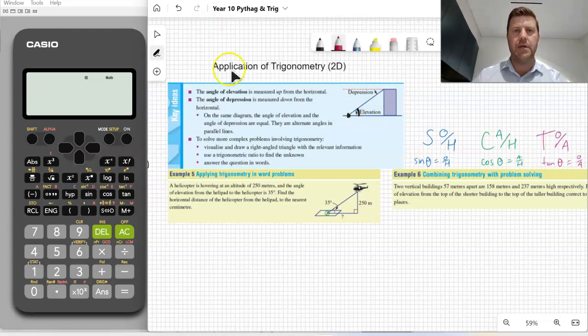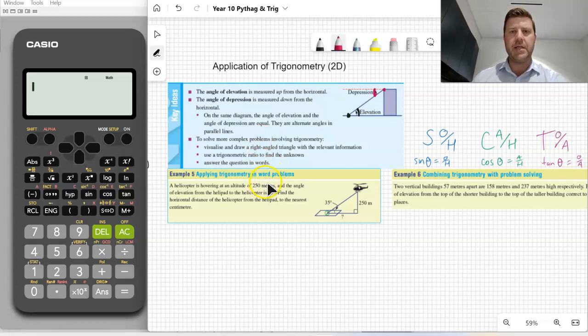Angle of depression is measured down from the horizontal. So in this case, if the person is standing at the top of the building looking down to a point at the bottom of the building, then the angle of depression would be from horizontal downwards. This is one that a lot of people make a mistake. They actually measure the angle in between the building and that line of sight. It's measured from the horizontal line down to that line of sight.